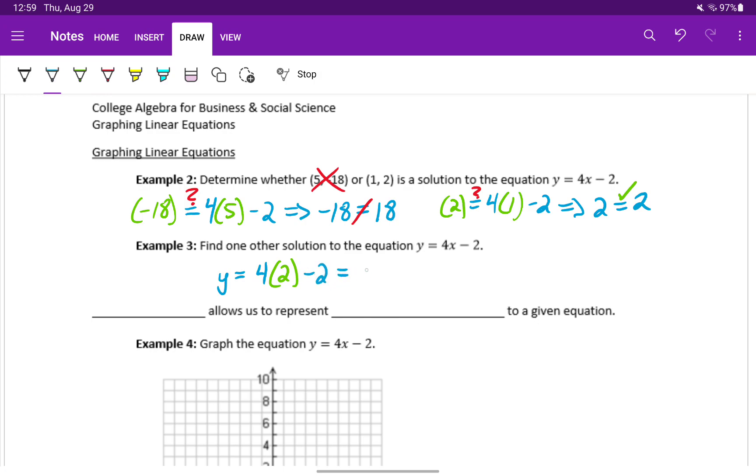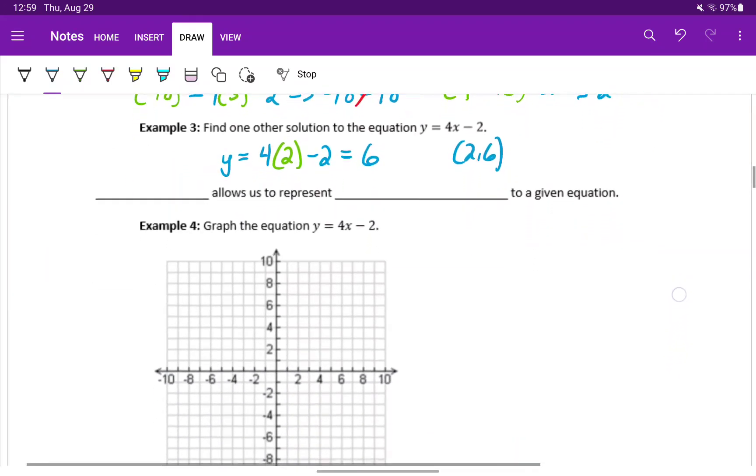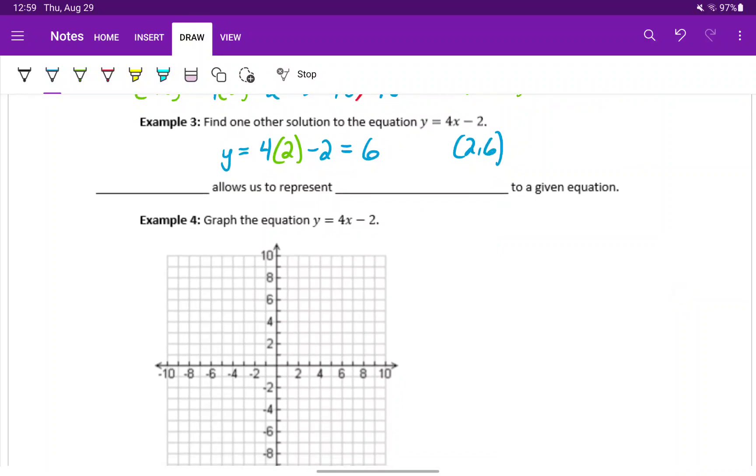When we plug in x equals 2, we get 8 minus 2, or 6, which means we have another coordinate pair which is a solution to this equation, 2 comma 6. We could continue that process indefinitely, plugging in more and more values for x and generating a corresponding y value.